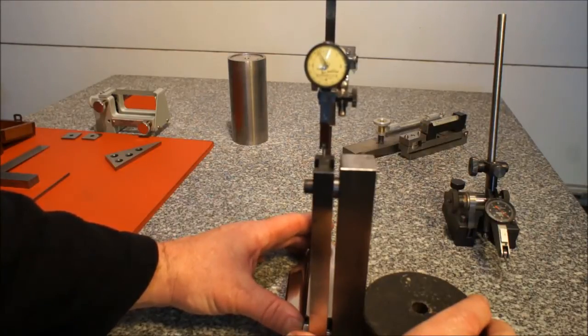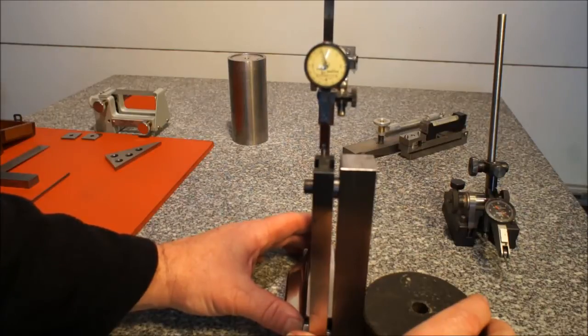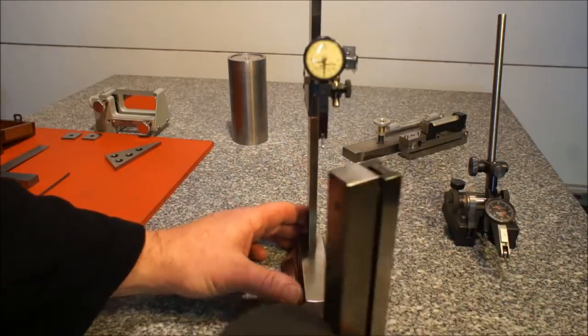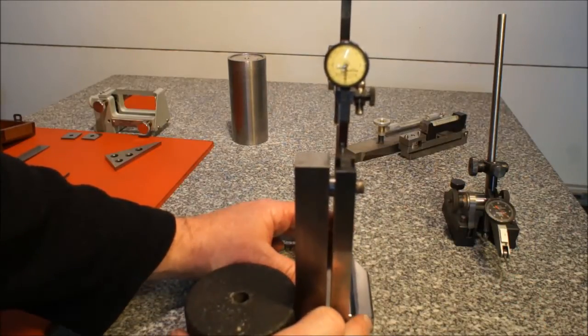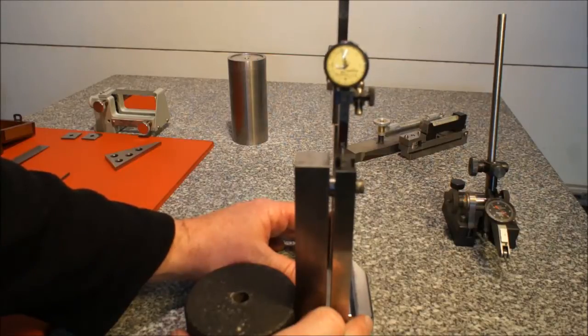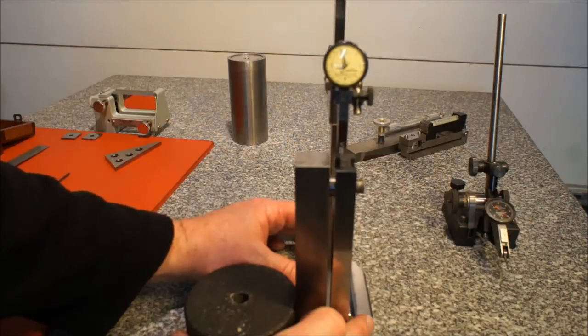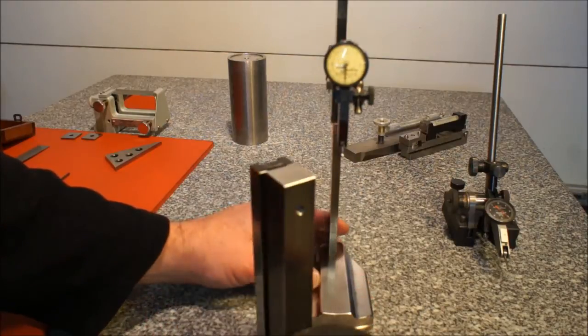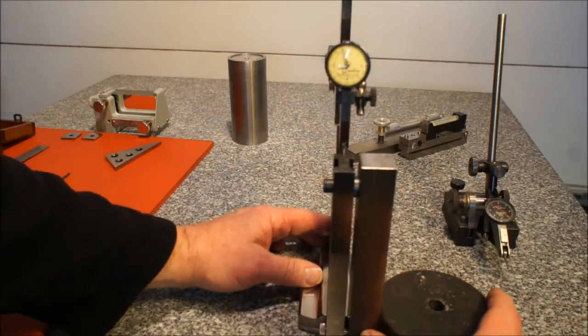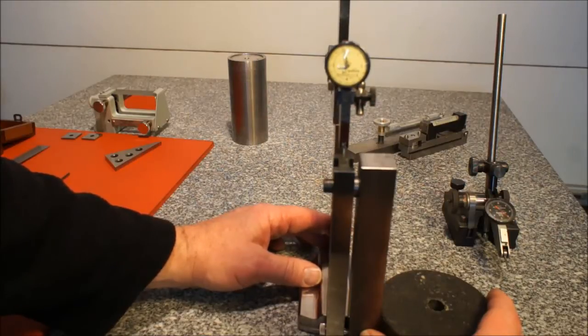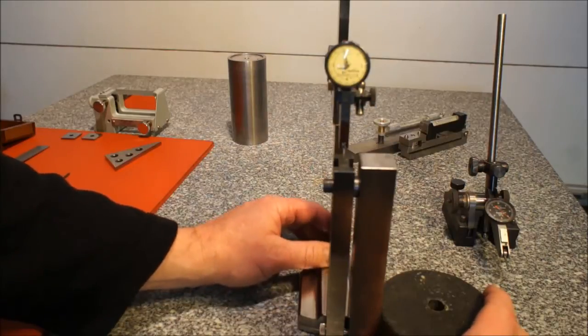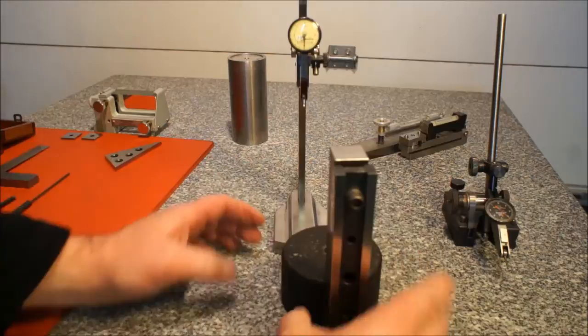You can see we're measuring approximately 4 tenths. Rotate around to the other side. This is called the reversal principle, where you can reverse your straight edge and verify your reading because we know that the straight edge is parallel. I'm reading about 3 tenths on this side. Everything affects the process here. The gauging pressure, etc. And 2.5 to 3 tenths. So for illustration purposes, we're going to call that accurate to within a couple 10 thousandths of square.